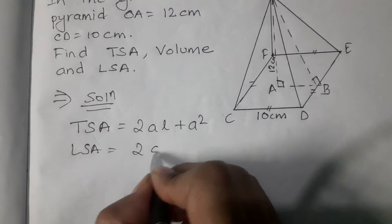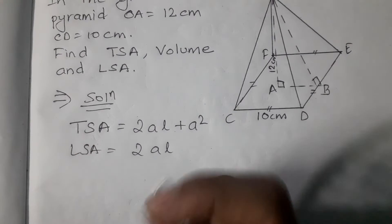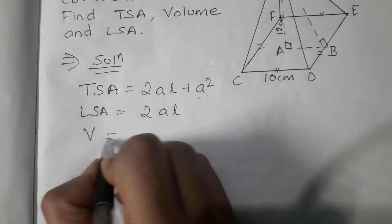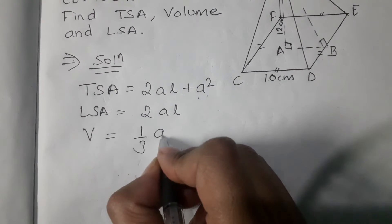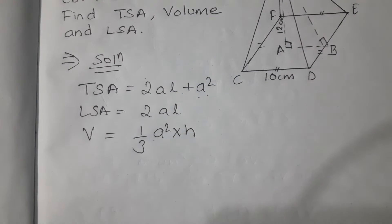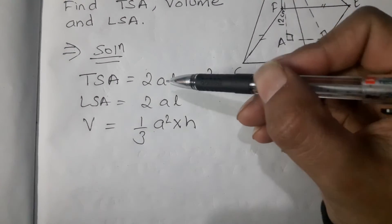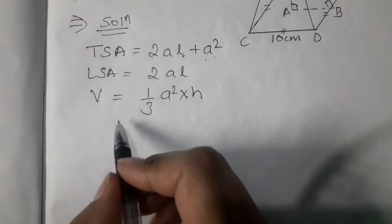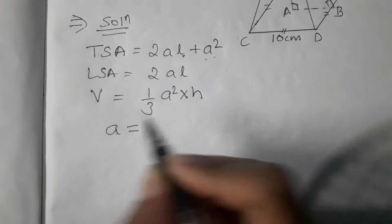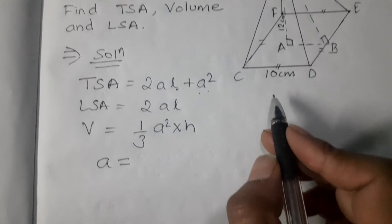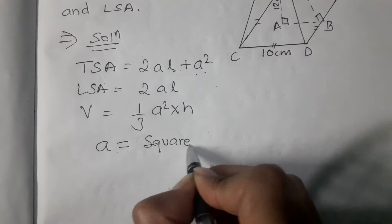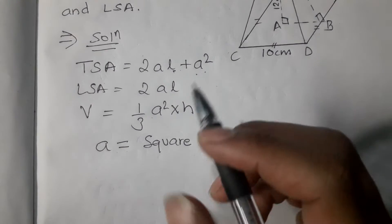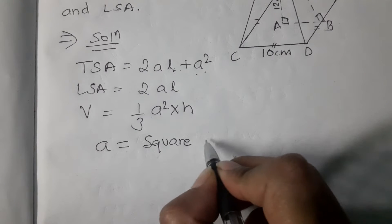The volume is 1/3 times a squared times h. There is a formula that we use. If you want to use it, we can work with the square length. Basically, we use L, the slant height, with the square base length a.